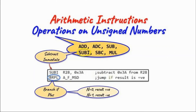As an example to demonstrate the impact of arithmetic operations on the status flags, here we have this piece of assembly code. We are using the instruction subtract immediate, subtracting a constant from the content of register R28, and the result goes into R28. Then we use the conditional branch instruction branch-if-plus. If the result of the subtraction is positive — checked via the negative flag being zero — the program jumps to the label. If the negative flag is one, the result is negative and this instruction will be skipped.